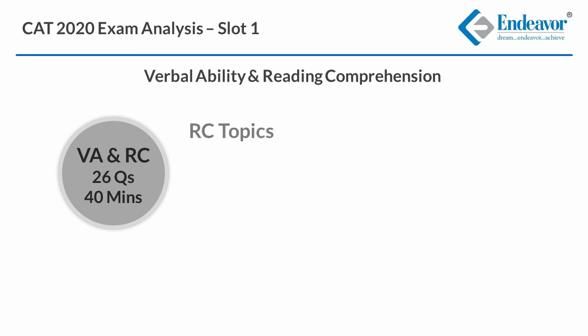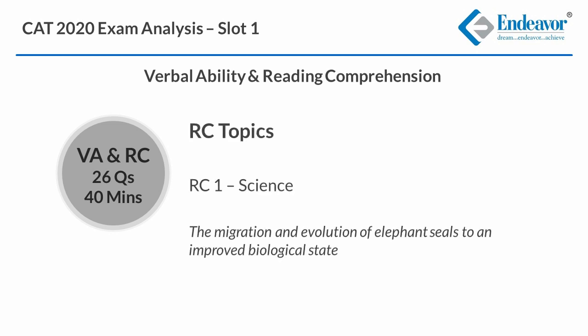RC 1 was on science — the migration and evolution of elephant seals to an improved biological state. It carried 4 questions and was of moderate difficulty level.